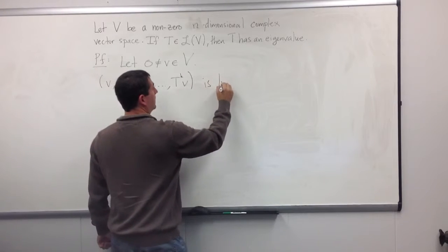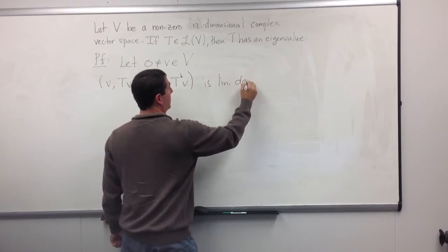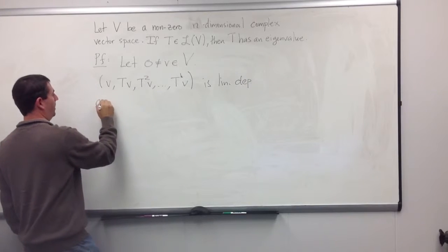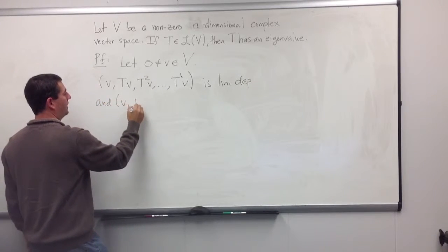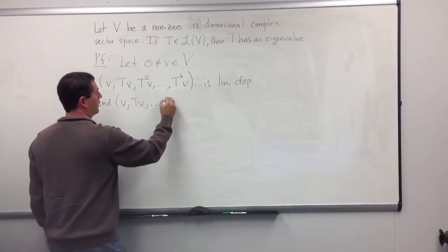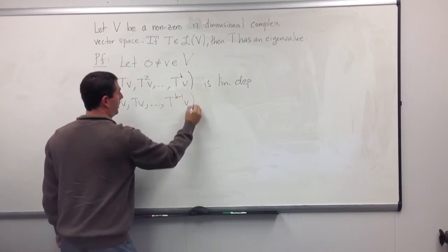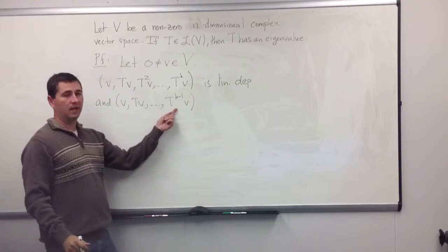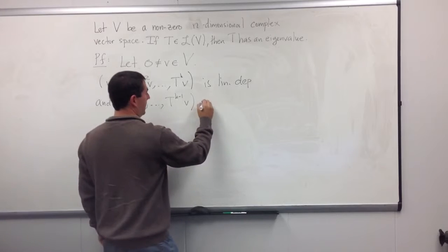So this is linearly dependent, and if I went one less, if I stopped at k minus 1 applications of T, this would be a linearly independent list.